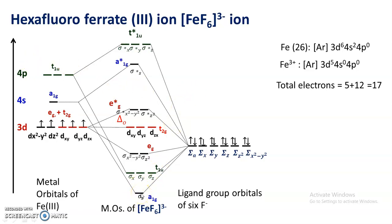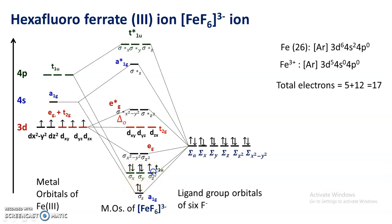The first electron enters the σs (a1g) orbital because it has the lowest energy. The second electron pairs with it since a1g is a non-degenerate orbital. The third and fourth electrons enter the t1u orbitals. By Hund's rule of maximum multiplicity, there is no pairing unless all available orbitals of the same energy are singly occupied. So electrons 3, 4, and 5 singly occupy the triply degenerate t1u orbitals, then pairing begins: electrons 6, 7, and 8.